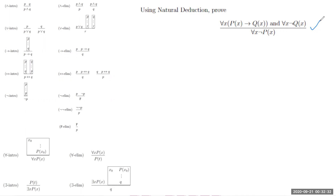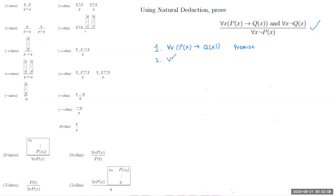So let's start off this proof by writing out our premises. Premise one is: for all x, P(x) implies Q(x). Premise two is: for all x, not Q(x).